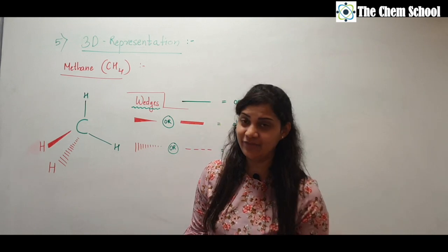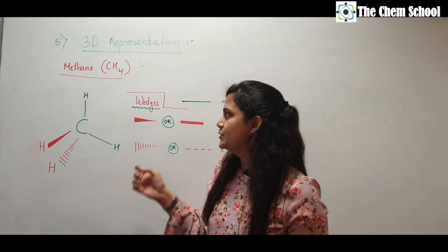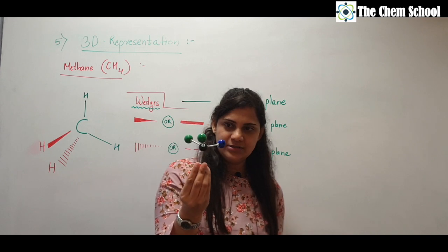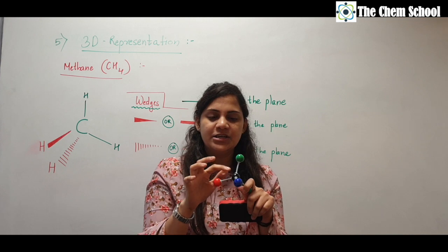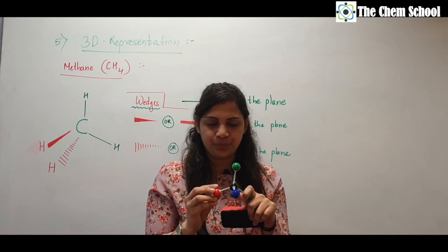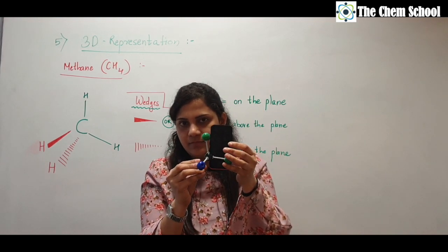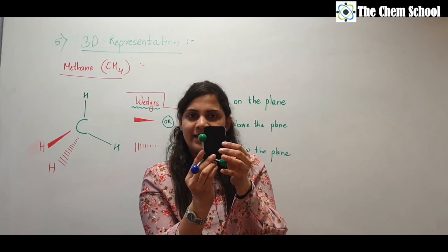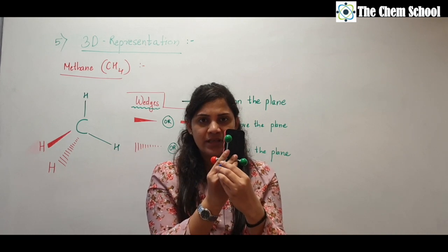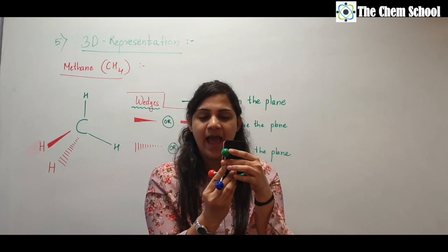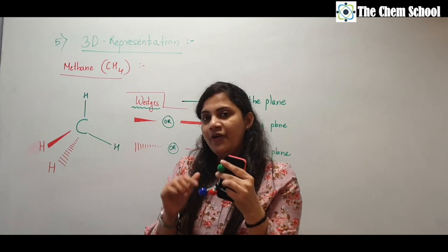The last structural representation is 3D representation. Most organic compounds are three-dimensional. Taking methane as the example — the central atom is carbon and the four corners are hydrogen. Two hydrogens lie on the plane (the black surface), one hydrogen is coming towards you (above the plane), and one is behind the surface (below the plane). We cannot draw this three-dimensional structure directly on a two-dimensional surface, so we use certain conventions.